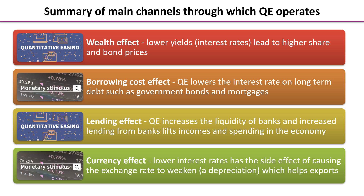Borrowing cost effect: it lowers interest rates on long-term debt such as government bonds and mortgages. So if it's cheaper credit, then hopefully consumption will rise, investment will rise and aggregate demand should rise. Quantitative easing also has a lending effect. QE increases the liquidity of banks because they've now got all this cash instead of these IOUs, and this should encourage them to actually lend more, which in turn should encourage spending in the economy.